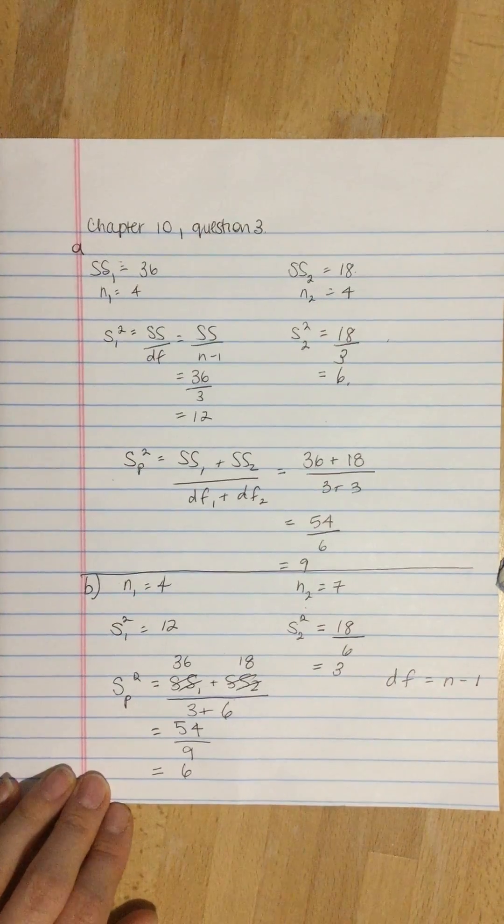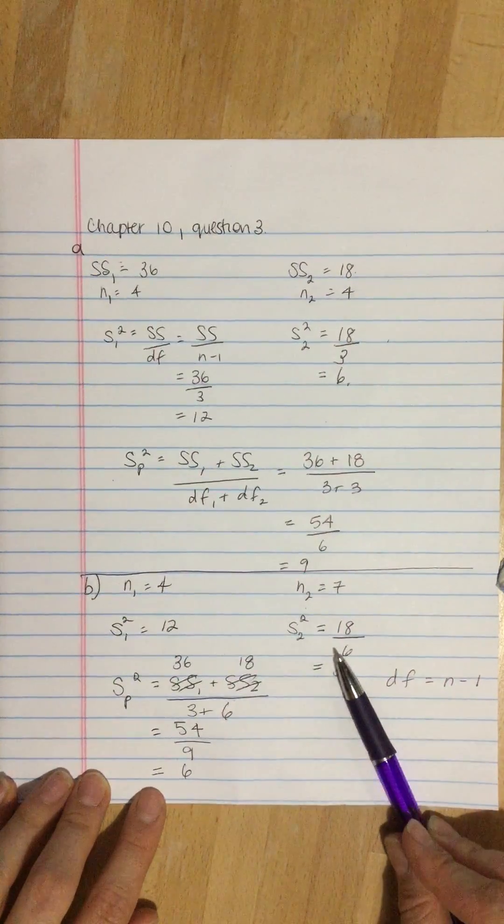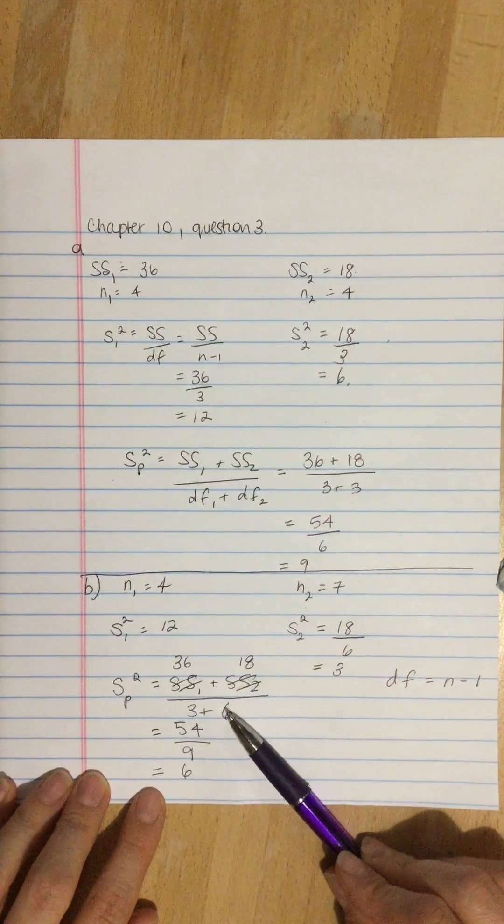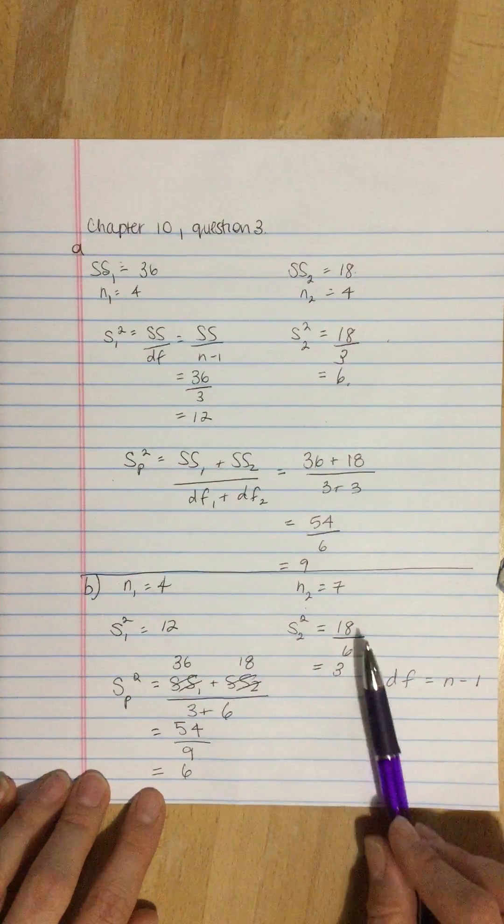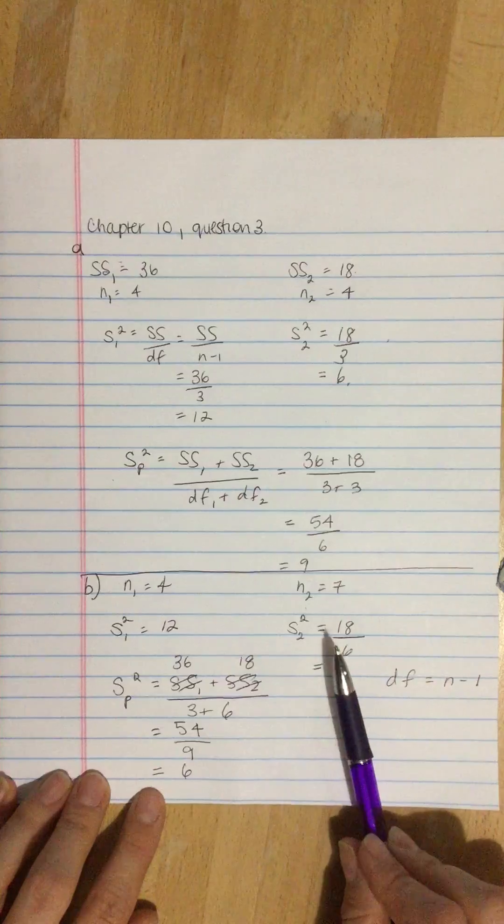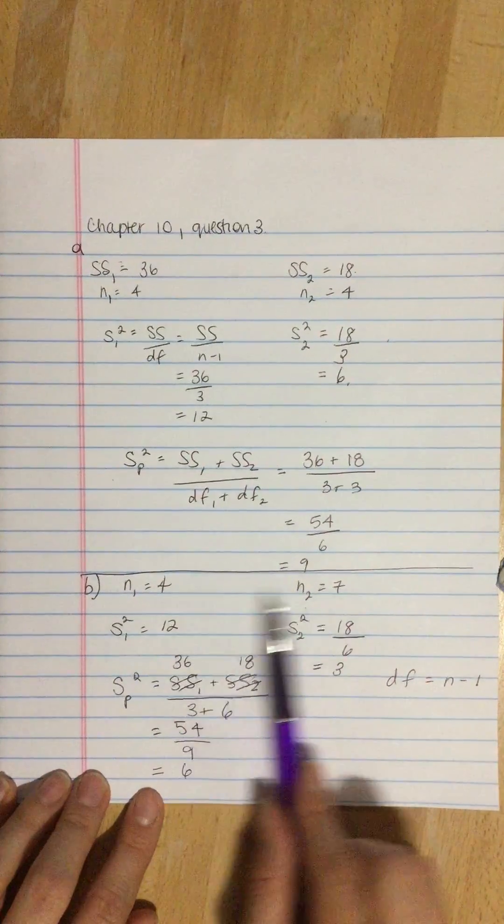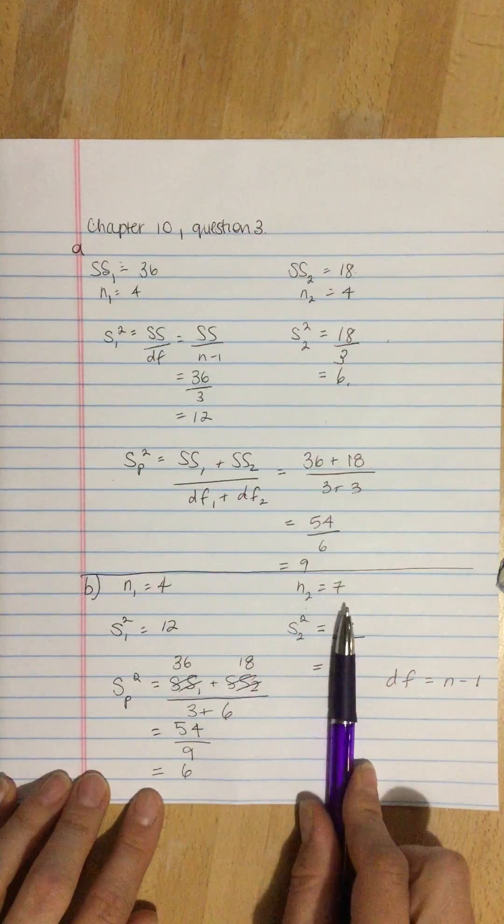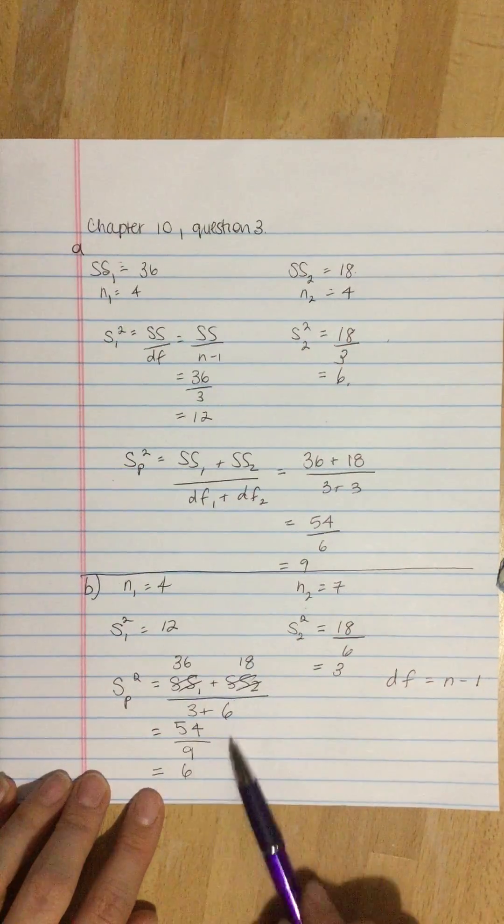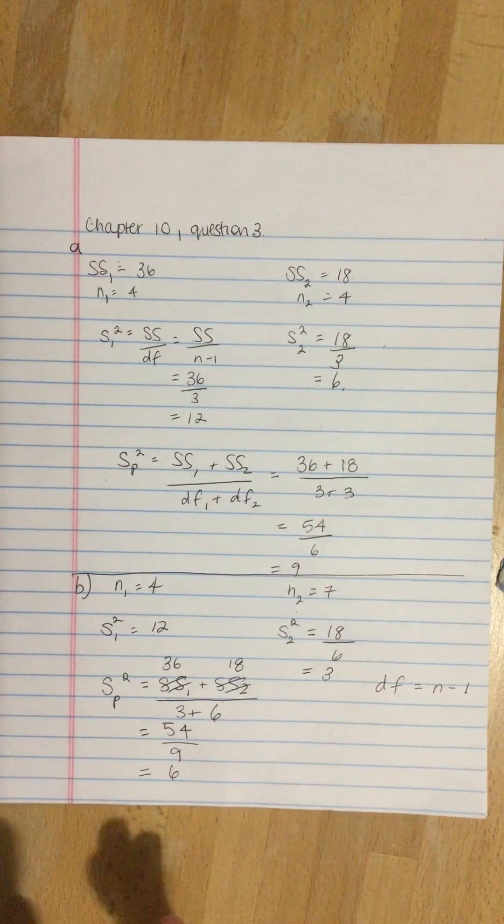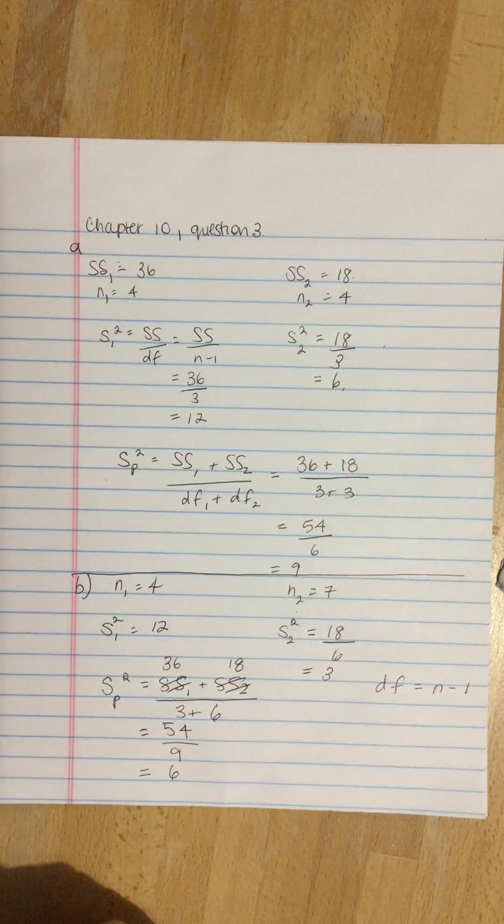So 6 is closer to 3 than it is to 12. And that's because the sample size over here is 7, and the sample size over here is 4. As those two sample sizes get further and further apart, they get more and more different, you're going to see more and more difference in the pooled variance from being in the dead center to being closer to one of the sample variances.